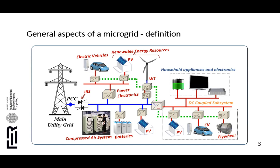The first mode is grid-connected mode and the second one is islanding mode. This figure illustrates a typical hybrid microgrid consisting of an AC and a DC part. The DC part is illustrated with the red lines and the AC part is illustrated with the blue ones.